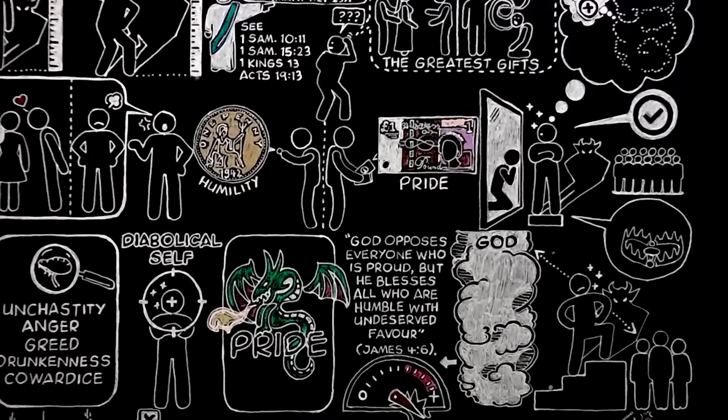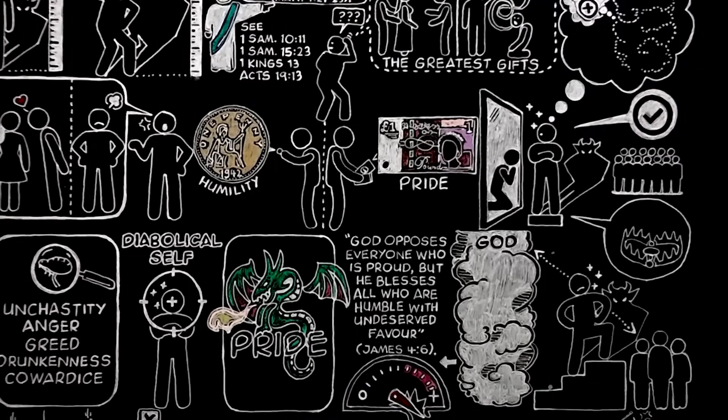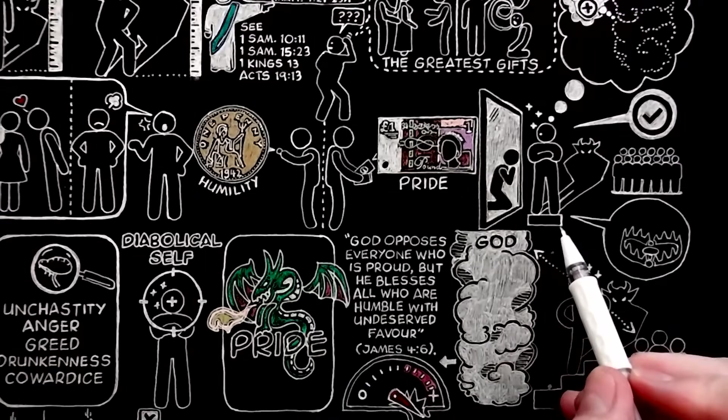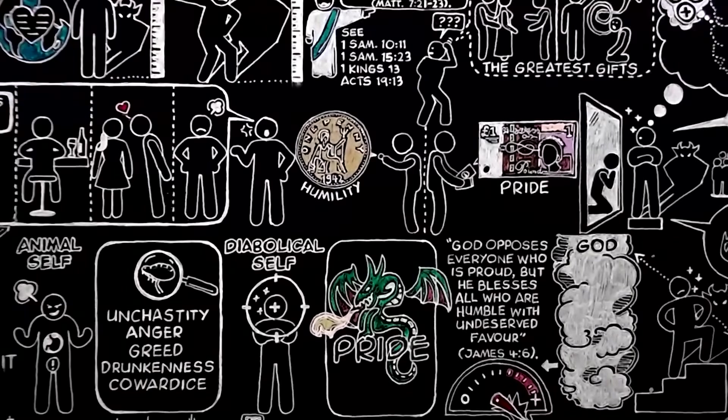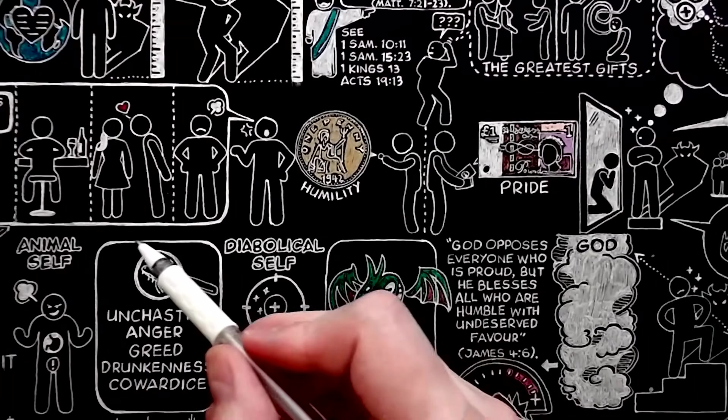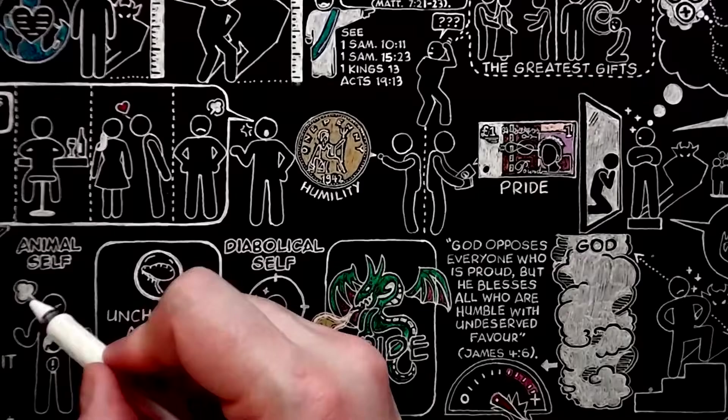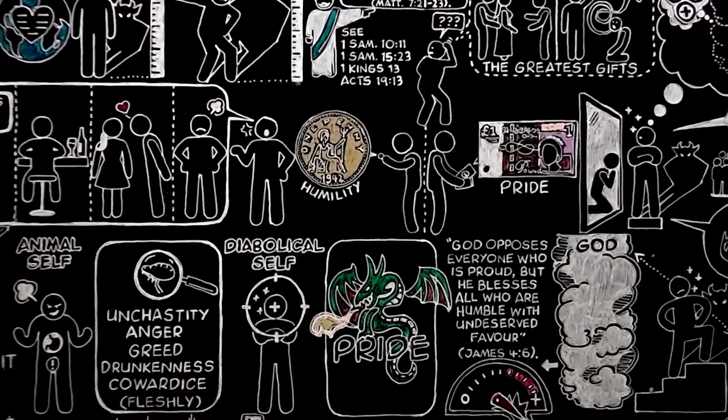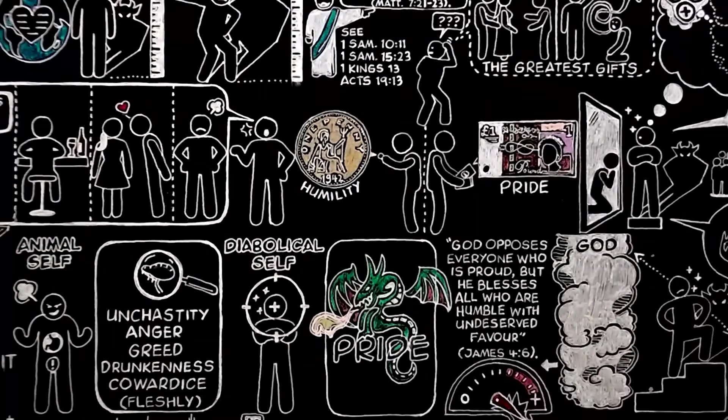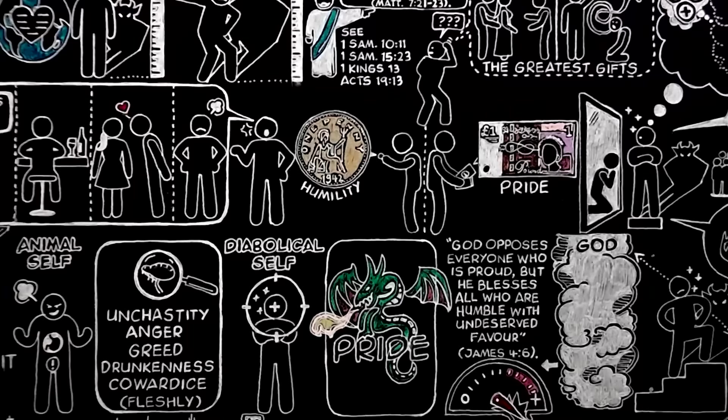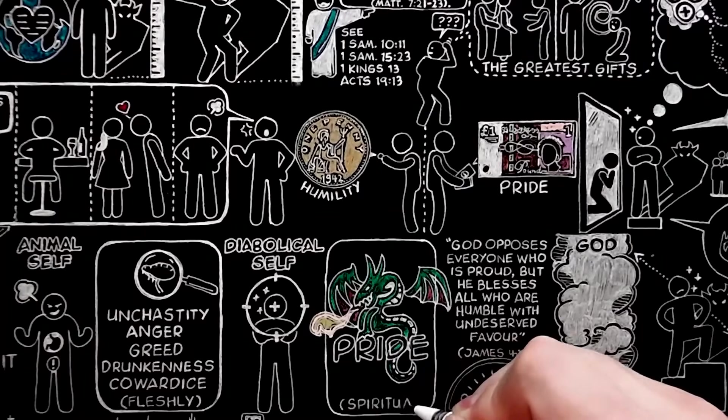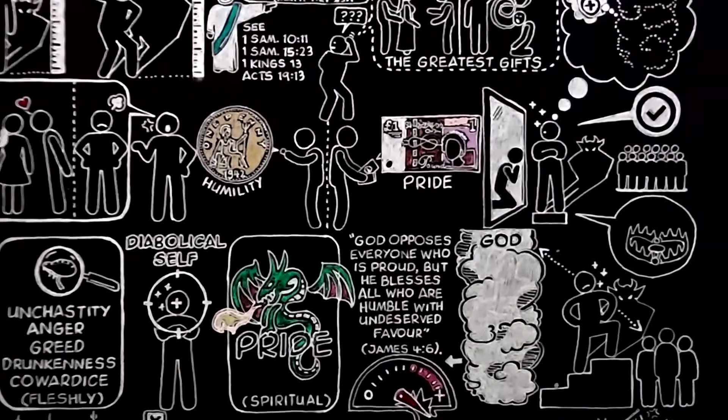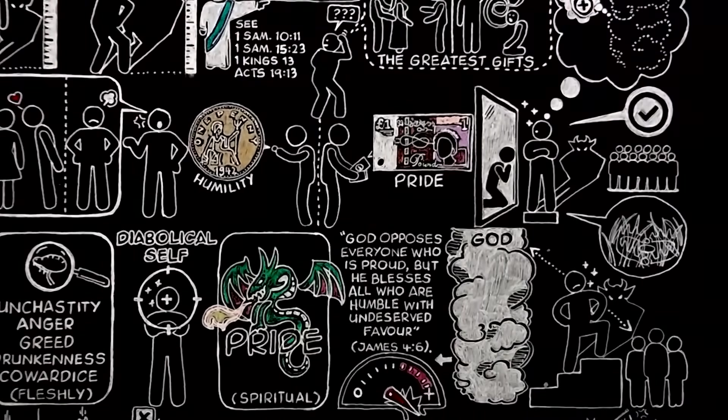It is a terrible thing that the worst of all the vices can smuggle itself into the very centre of our religious life. But you can see why. The other and less bad vices come from the devil working on us through our animal nature. But this does not come through our animal nature at all. It comes direct from hell. It is purely spiritual. Consequently, it is far more subtle and deadly.